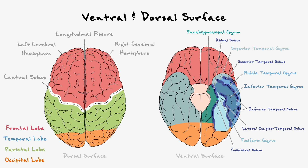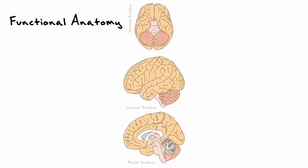Up until now we have talked a lot about the landmarks of the brain, but not so much about what actually happens within or around them. It turns out that to process the world around us and ourselves, the brain is divided into distinct functional regions that sometimes process very specialized bits of information, or sometimes integrate information from different areas to create complex cognitive functions.